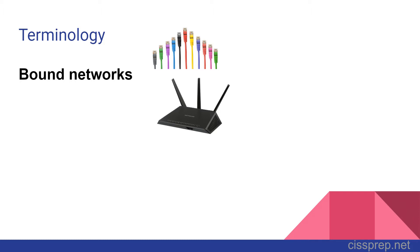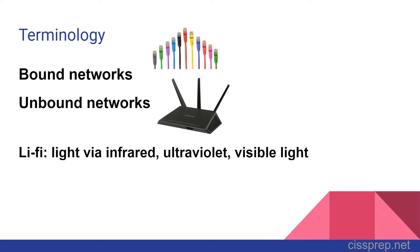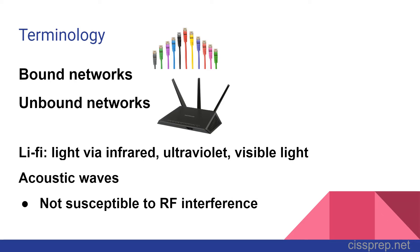A bound network is simply a network connected by physical media. An unbound network is one that's not connected by physical media. Li-Fi refers to unbound or wireless, currently under development — it uses light to send data. Acoustic waves uses sound. ISC squared only provided two sentences on these. One thing ISC squared didn't mention but you should be aware of is that these two are not susceptible to radio frequency interference or disruptions.